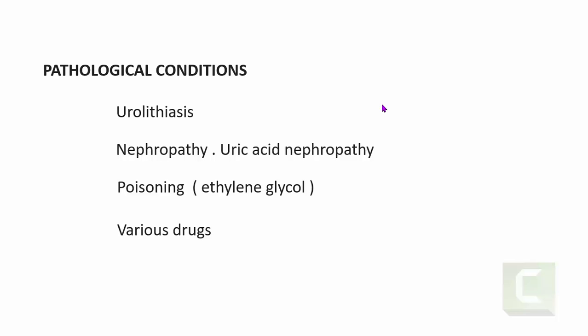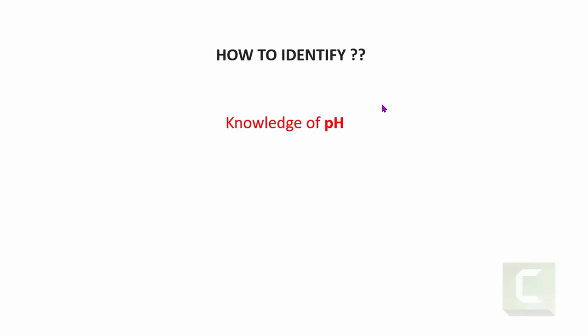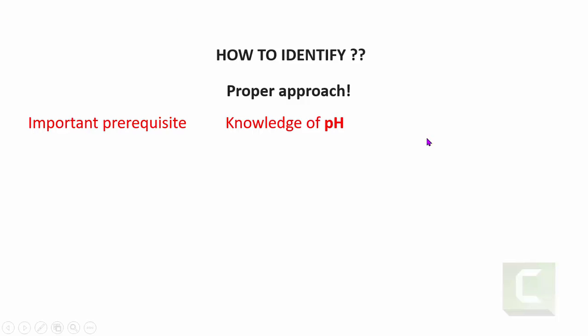How do you identify crystals in urine? You should have a proper approach before looking at the various morphological aspects. The most important prerequisite before examining urinary crystals is knowledge of the pH of urine. Certain crystals are commonly found in acidic urine, and certain crystals are commonly found in alkaline urine.